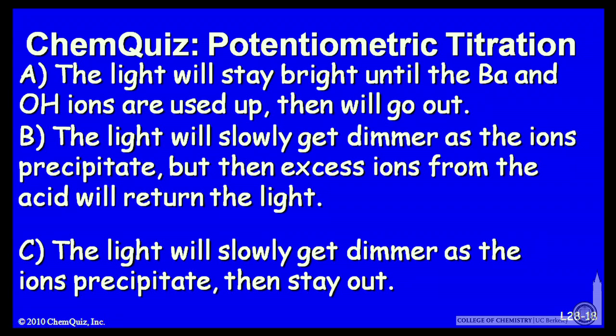B, the light will slowly get dimmer as the ions precipitate, but then excess ions from the acid will return the light.